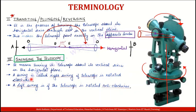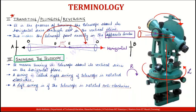Ab swinging ke hum ne kuch naam de rakhe hain — Right swing aur Left swing. To right swing kya hota hai: agar aap telescope ko clockwise rotate kar rahe hain, is direction mein rotate kar rahe hain, to woh right swing ho jayega. But agar mai usko anti-clockwise rotate kar raha hoon, jaise mein yahaan pe kar raha hoon, to woh left swing ho jayega. To simply, just direction mein aap apne theodolite ko rotate kar rahe hain woh direction decide karega ki aap right swing kar rahe hain ya left swing — agar clockwise hai to right swing, agar anti-clockwise hai to left swing.